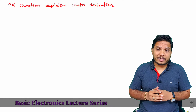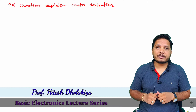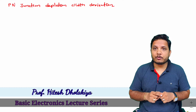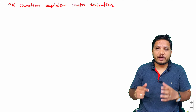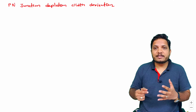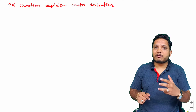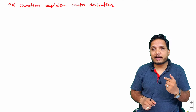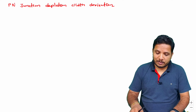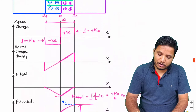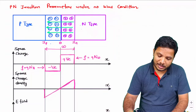Welcome to the basic electronics lecture series. I, Professor Itesh Dulakia, am going to explain the derivation of depletion region width for a P-N junction under zero bias condition. This session requires background from my last few videos in which I explained what happens with a P-N junction under no bias condition.